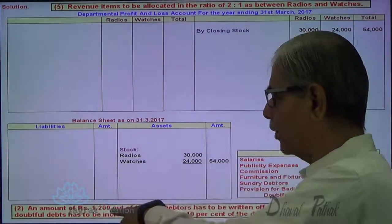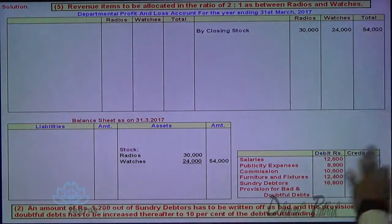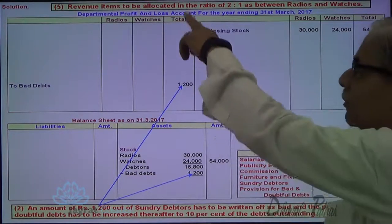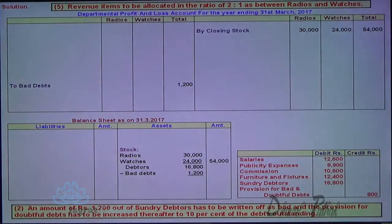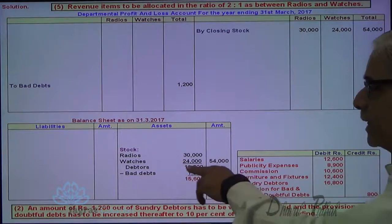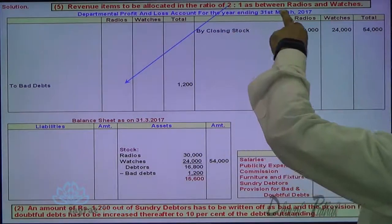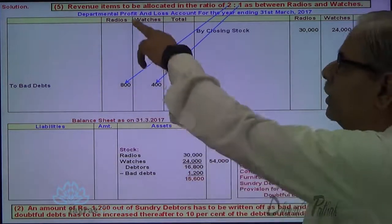Next adjustment: an amount of 1200 out of sundry debtors has to be written off as bad and the provision for doubtful debts has to be increased thereafter to 10% of the debts outstanding. Provision of 800 is already existing. Debtors are given — 16,800 minus bad debts. Bad debts are debited to the profit and loss account; the total amount is debited. Revenue items are going to be bifurcated as instructed at a later stage. Bad debts are deducted and debited here. This 1200 will be distributed in the ratio of 2 to 1, so 800 and 400 is the amount distributed to radio and watches.